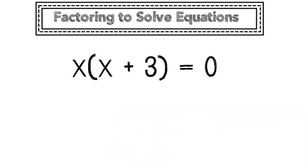Let's try that one more time. If a product is equal to 0, either the first factor is equal to 0 or the second factor is equal to 0.